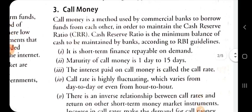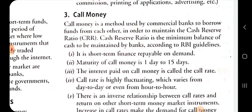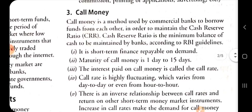The third instrument is call money. Call money is a method used by commercial banks to borrow funds from each other — one bank arranges short term funds from another bank. The needy bank issues call money to maintain its cash reserve ratio, which is the minimum balance of cash to be maintained by a bank according to RBI guidelines. Call money is arranged for one day to 15 days. The interest paid on call money is called the call rate, which is highly fluctuating as it varies from day to day and even hour to hour. There is an inverse relationship between call rates and the return on other short term money market instruments.